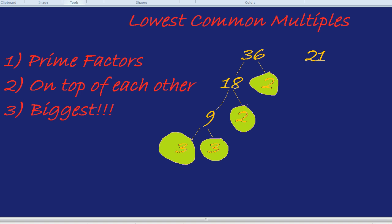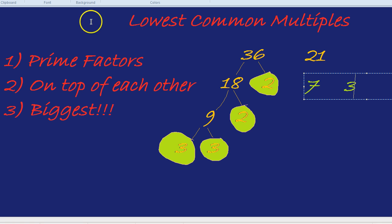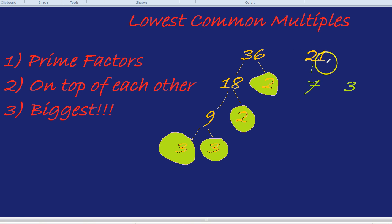Let's do the same thing for 21. 7 times 3 is 21, and 7 is a prime number and 3 is a prime number, so we're done. That didn't take long. Circle and highlight them.